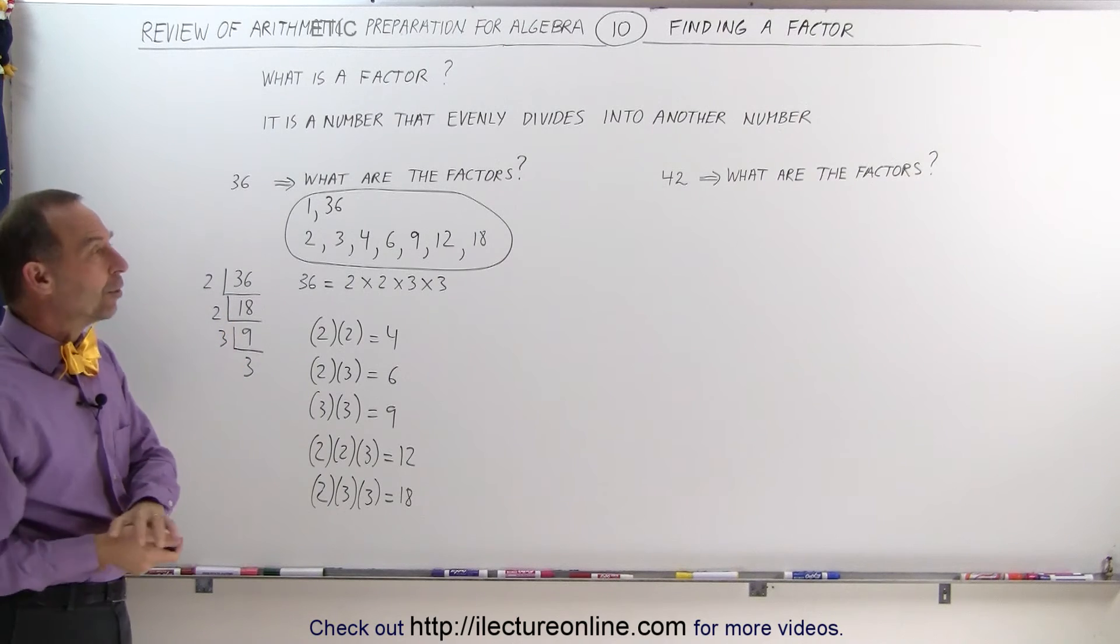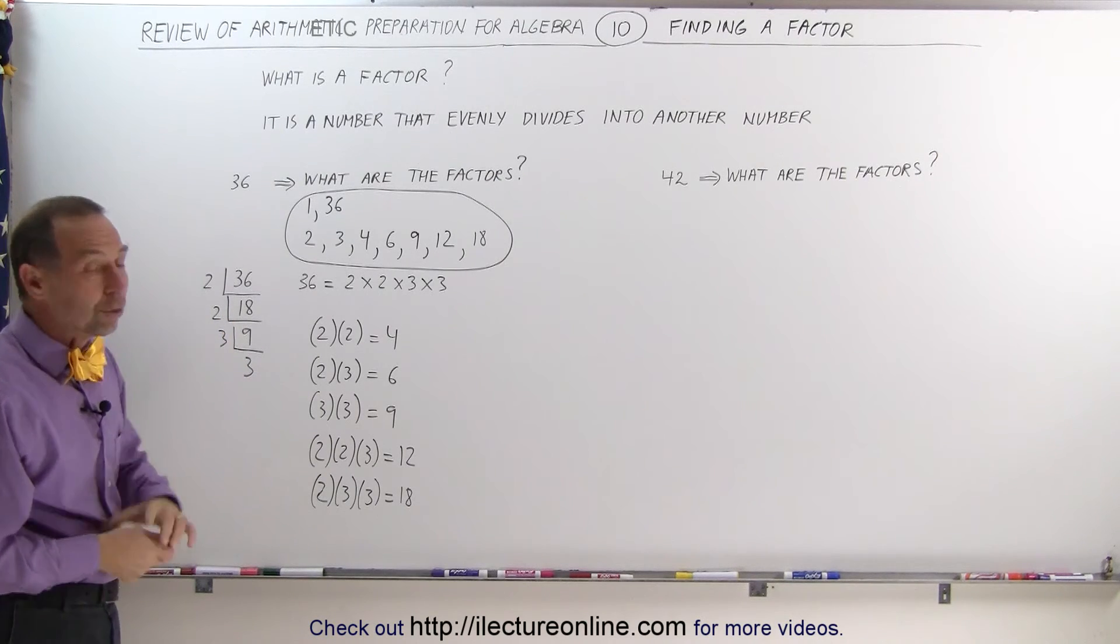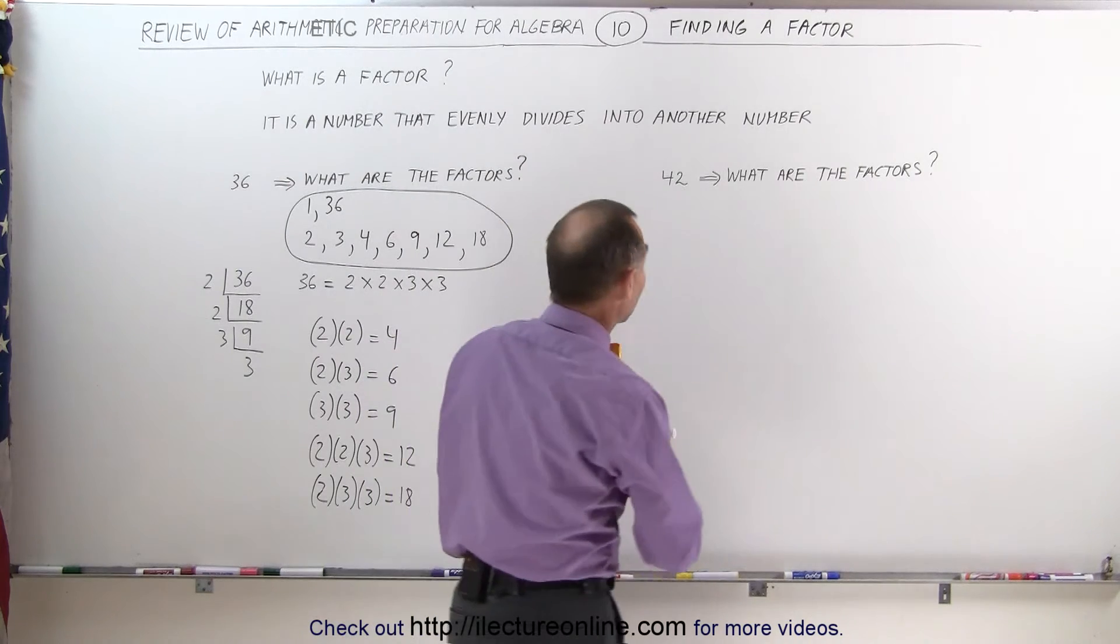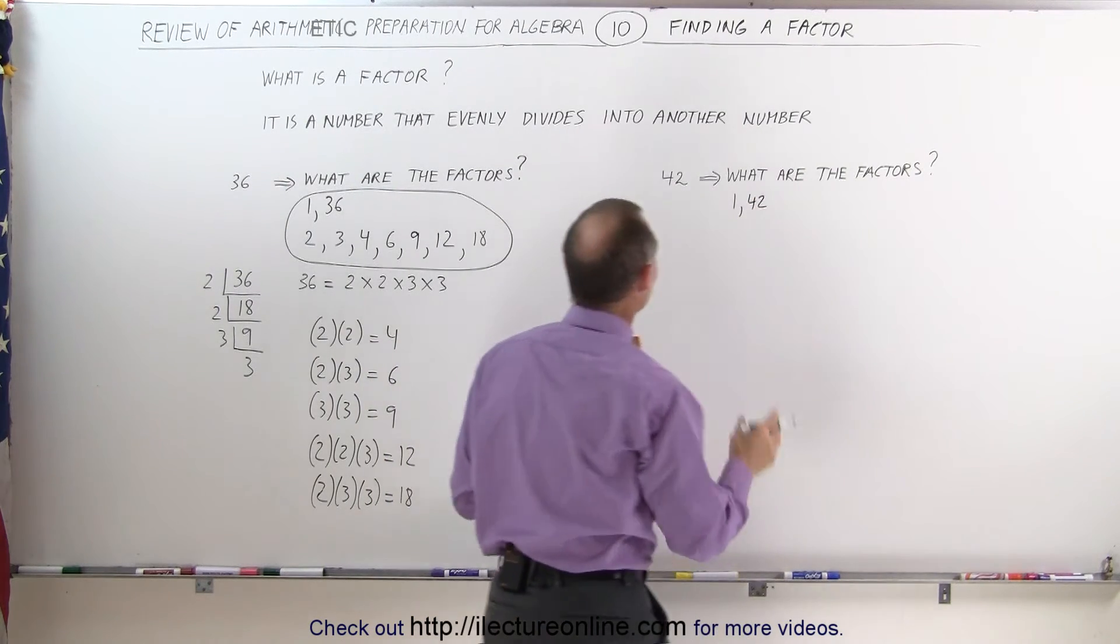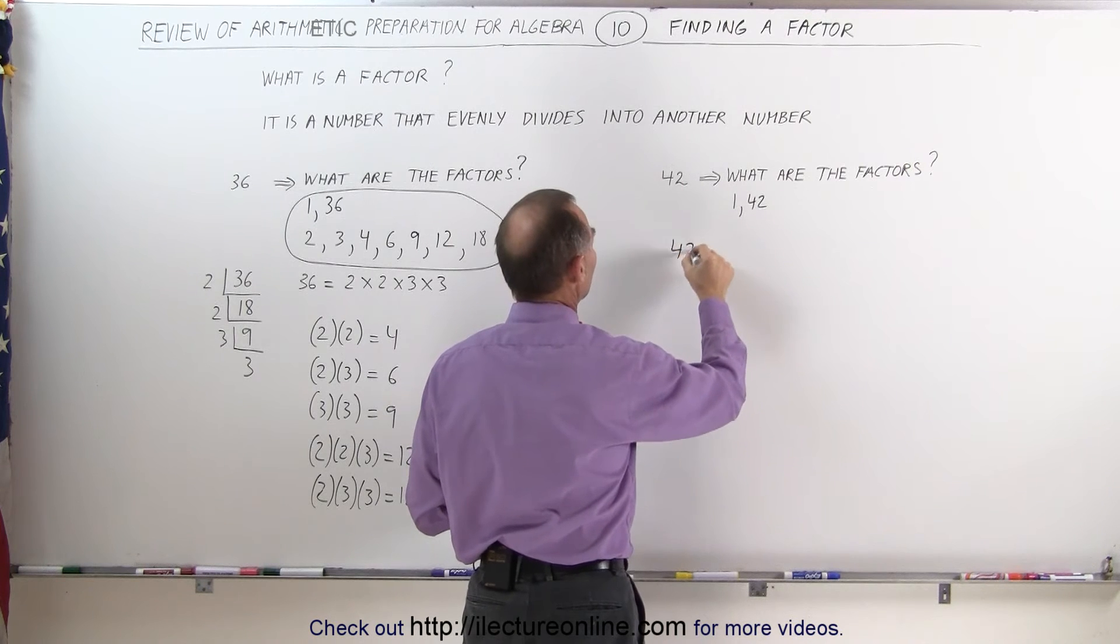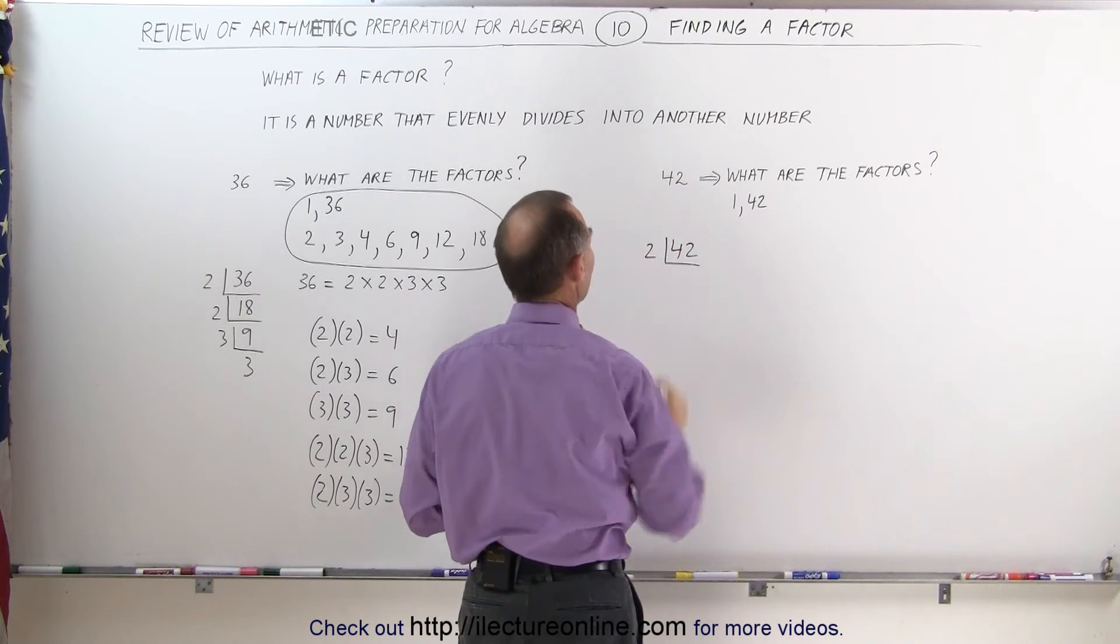Now, let's go find all the factors of the number 42. We'll use the same technique. First of all, you know that 1 and 42 will be the factors. And to find the other factors, you take the number 42 and divide it by the smallest prime number, 2.